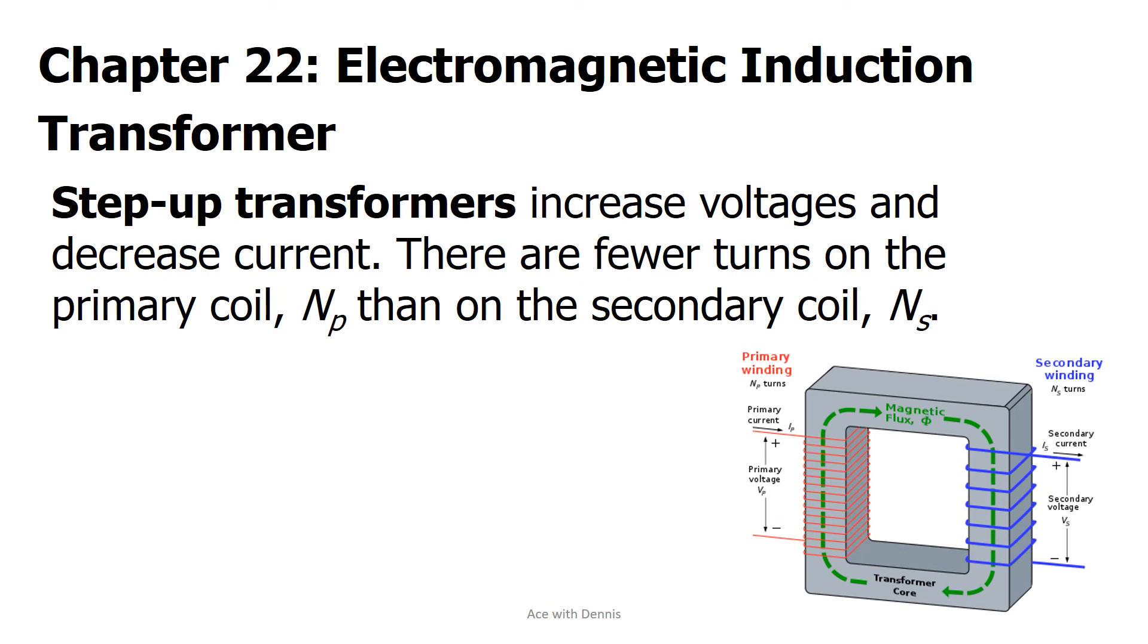Step-up transformers increase voltages and decrease current. There are fewer turns on the primary coil, Np, than on the secondary coil, Ns.